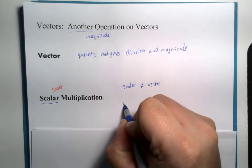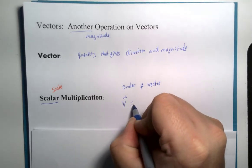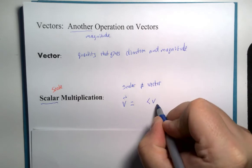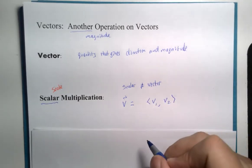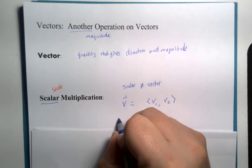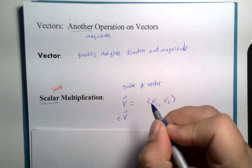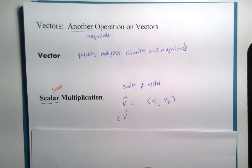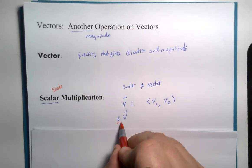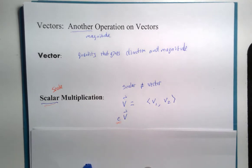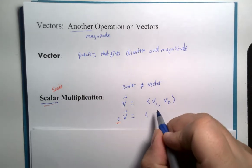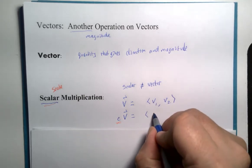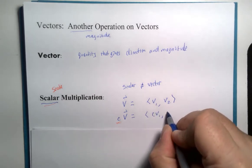If you have a vector v and it's defined by two components for a two dimensional case right now, if you multiply by some constant, that constant right here, that would be our scale. And the arithmetic operation just means to multiply each of the components by that scale value.